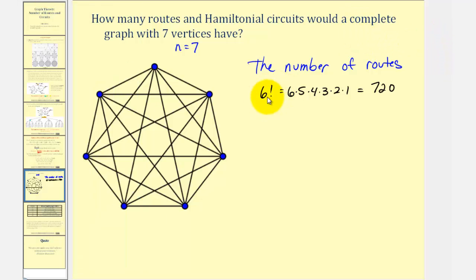And therefore, the number of circuits, or Hamiltonian circuits, would be n minus one factorial divided by two, or six factorial divided by two, which would be seven hundred twenty divided by two, or three hundred sixty.